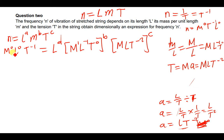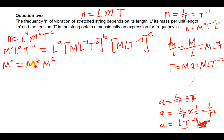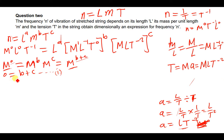Equating the dimensions, we pair like terms. For M: on the left the power is 0; on the right we have M^b from mass-per-unit-length and M^c from tension, giving b + c. Since the bases are the same, the powers must be equal, so: 0 = b + c. This is equation 1, which gives c = −b.